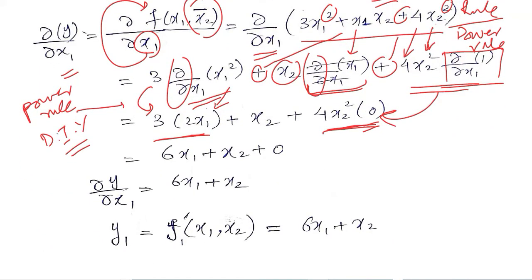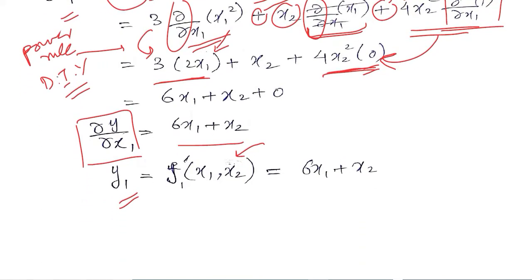This is the answer for the derivative of function y with respect to x1, where we have kept x2 as a constant. We remove the bar to show that there is no longer a need to specify that, since the derivative has been taken and its effect has been shown in the previous steps.